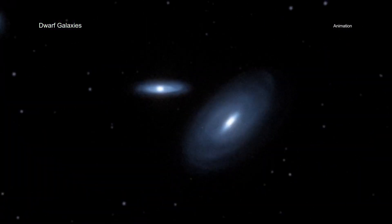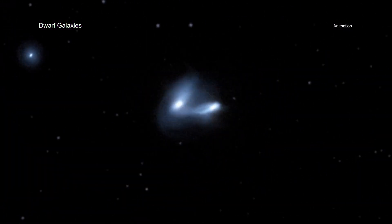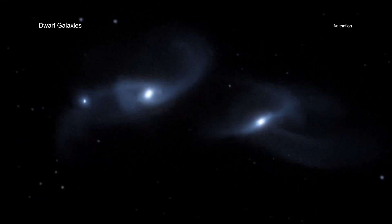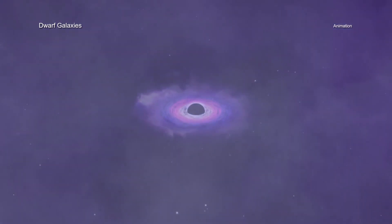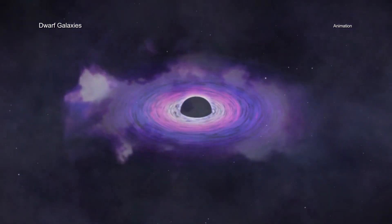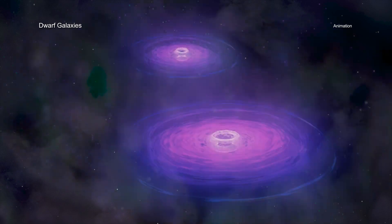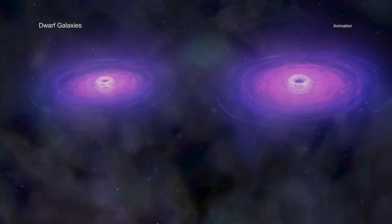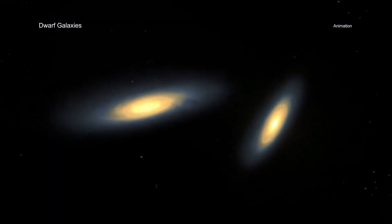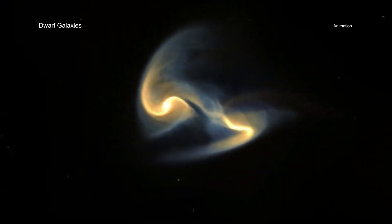Collisions between the pairs of dwarf galaxies have pulled gas toward the giant black holes they each contain, causing the black holes to grow. Eventually, the likely collision of the black holes will cause them to merge into much larger black holes. The pairs of galaxies will also merge into one.